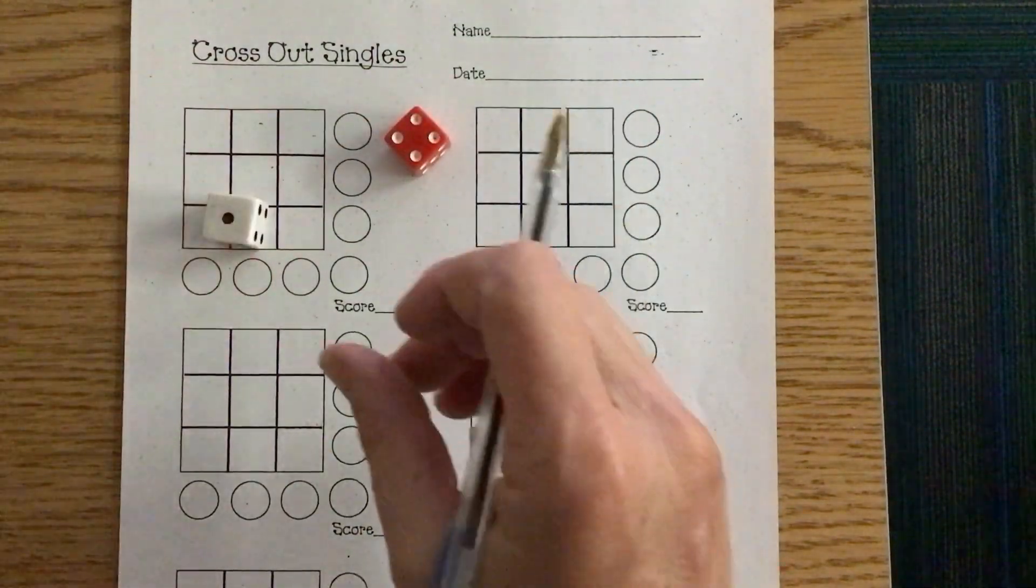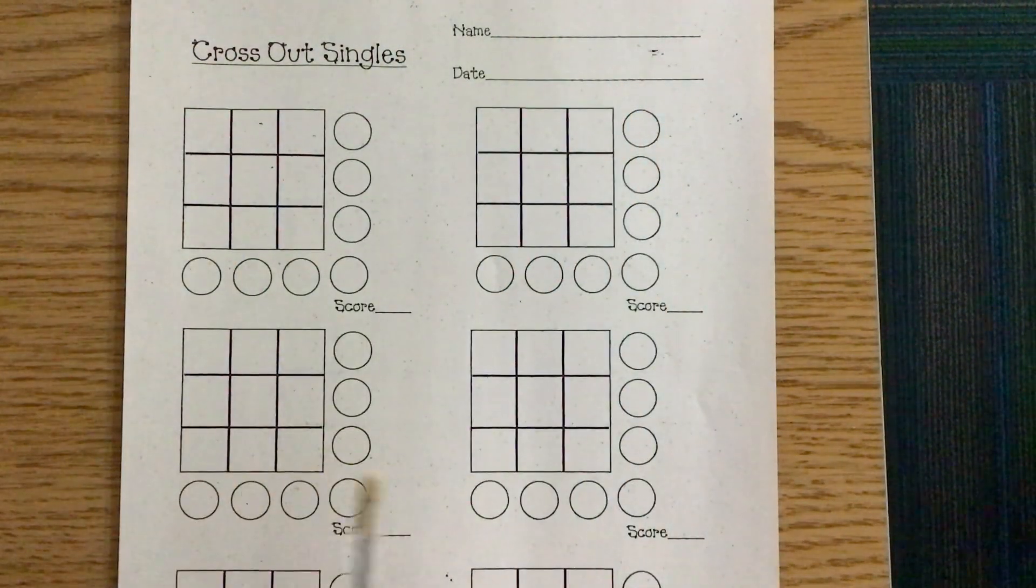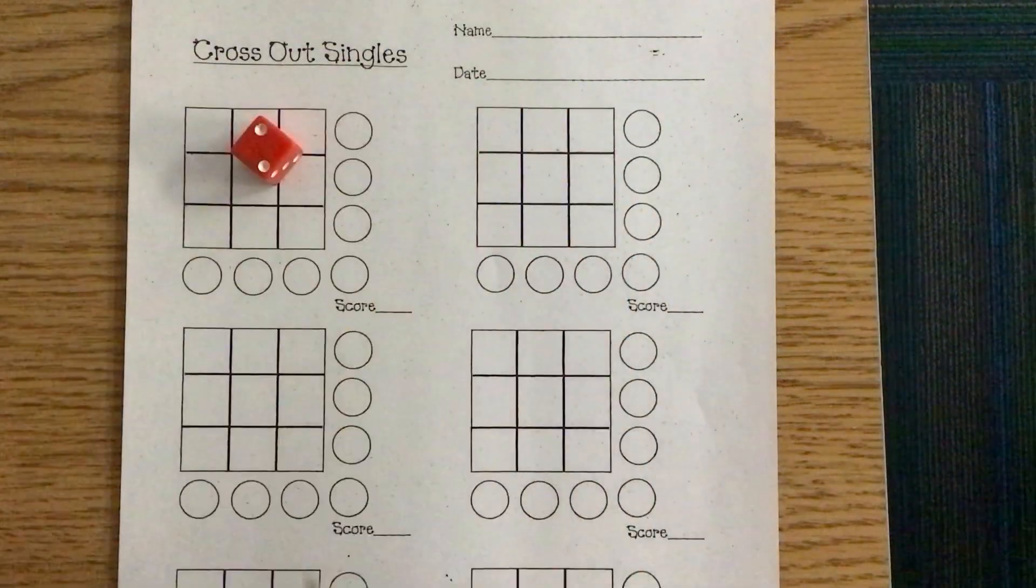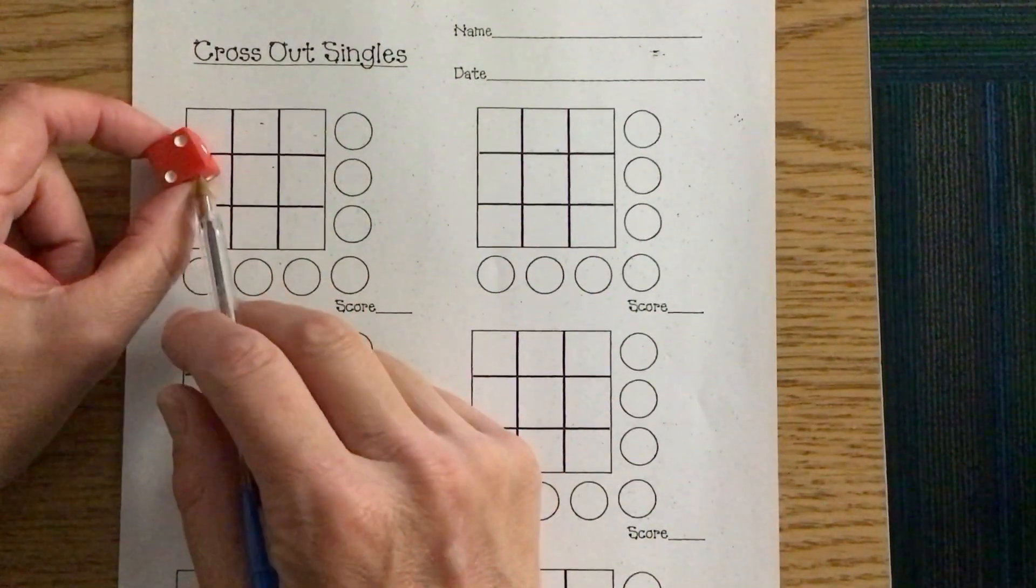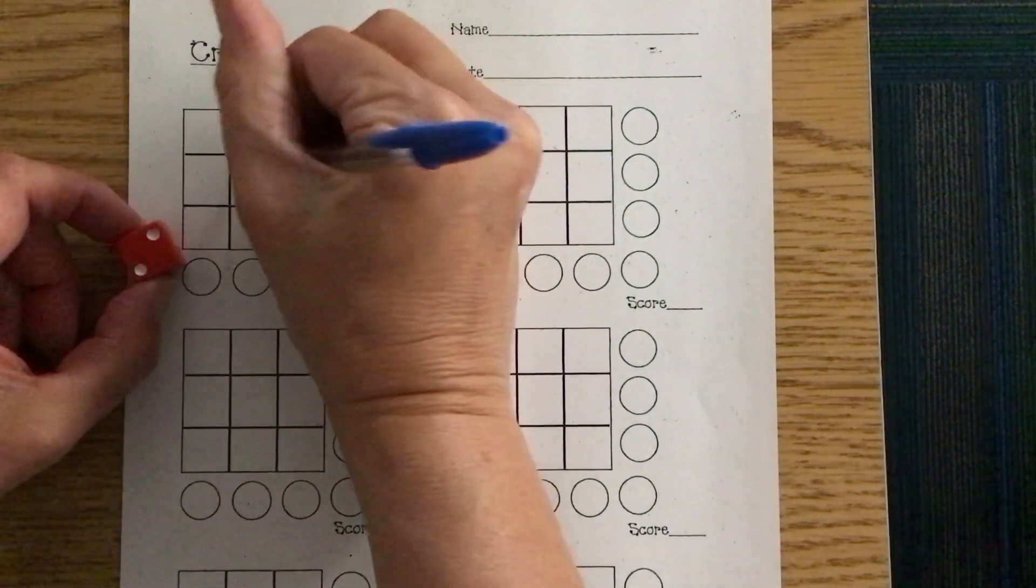Dice for you, dice for your partner, and what you're going to start doing is just rolling the dice. The rule is the dice has to stay on the paper when you roll it, and you can place that number that you roll in any of these nine squares.